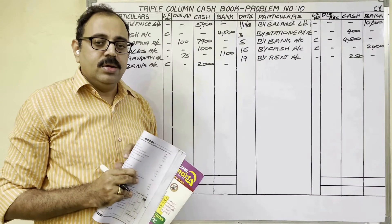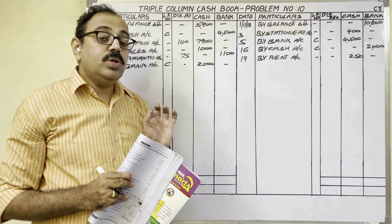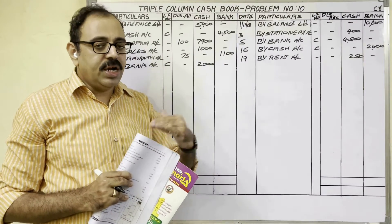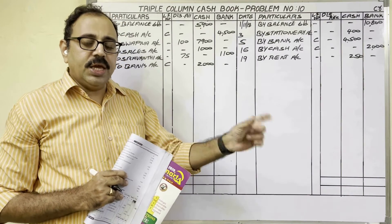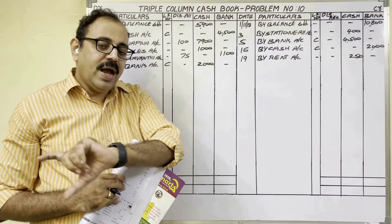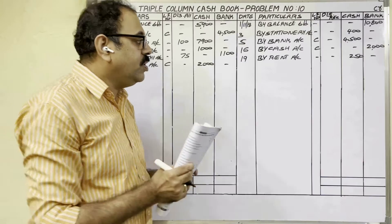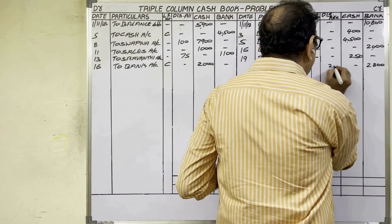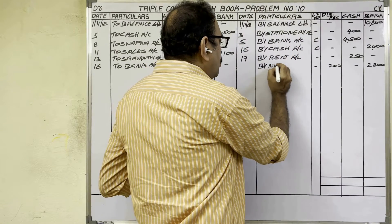Twenty-first date: issued check to Nikhil 2,800, discount received 200 rupees. The firm has to pay 3,000 to Nikhil, but in full settlement issued a check for 2,800 — so 200 is discount received. When the check is issued to Nikhil, he goes to our bank, presents the check, and takes the money — so bank balance is decreasing. Therefore, credit side bank column: 2,800 rupees, discount received column: 200 rupees. In particulars, write 'by Nikhil account.'